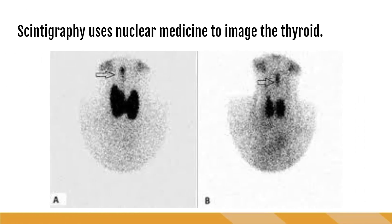The first imaging modality we'll look at is nuclear medicine, specifically scintigraphy. Scintigraphy uses nuclear medicine to image the thyroid. The patient is basically injected with a radioactive iodine and then a nuclear medicine scan of the body is performed. The idea is that this will show where that iodine tracer is. Since the thyroid is the only organ that can metabolize iodine, we would expect to see this iodine tracer in areas made of thyroid tissue.